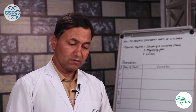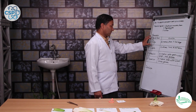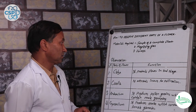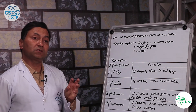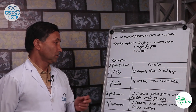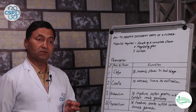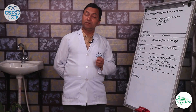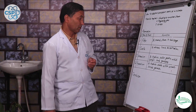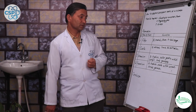I will show you the colour of the flowered leaf and display its function and the name in our observation table. The main function of the Calyx is it protects the flower in the bud stage. Number 2, Corolla — it attracts insects for pollination. The Androecium produces pollen grains which contain male gametes.